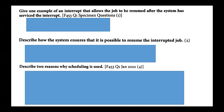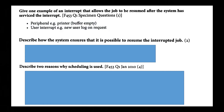One example of an interrupt that allows the job to be resumed: peripheral — such as a printer when the buffer is empty. Don't just say 'printer'; specify what it is, like 'the buffer is empty to transmit the data'. There's also the user interrupt — a new user logs a request. It's good to give the interrupt type and then an example, even if it's only one mark.